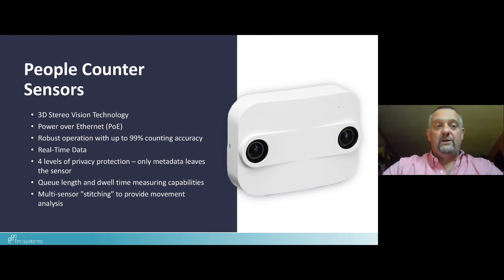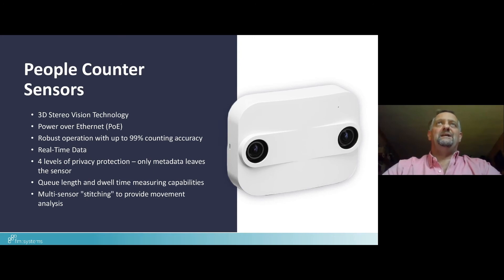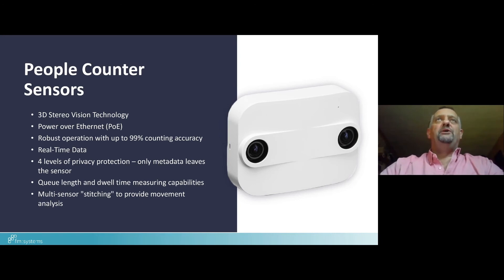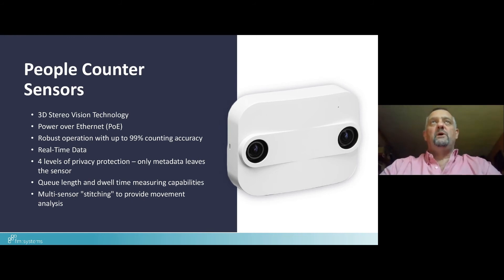There's also a very useful multi-sensor feature, where up to nine of these sensors can be stitched together. Anonymization is maintained — a person is only seen as a body — but with multi-sensor stitching, that body can be tracked through all nine sensors, allowing you to see movement of people within a defined space. This is similar to what can be done with the area sensor, though not possible with the PIR sensor.